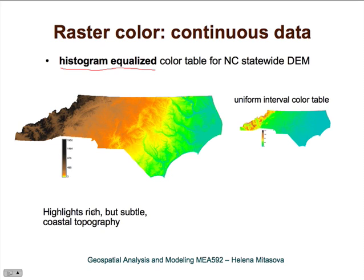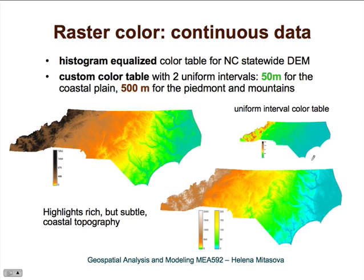This approach highlights rich but subtle coastal topography. You can see what a beautiful structure comes out compared to the uniform interval map. We can also solve this issue by creating a custom color table with two uniform intervals — say 50 meters for the coastal plain and 500 meters for the piedmont and mountains. That works pretty well too, but it is more subjective.